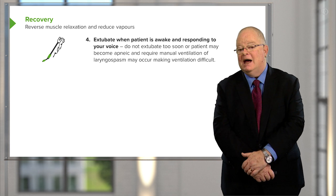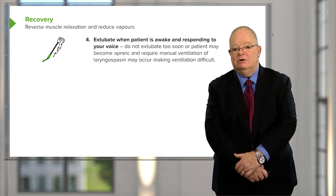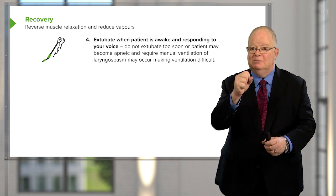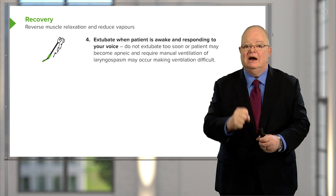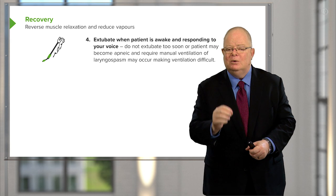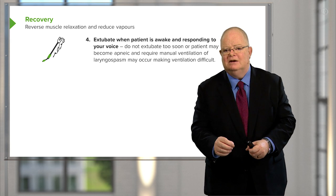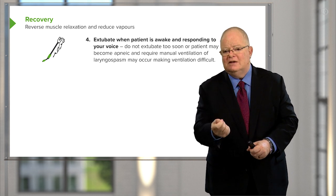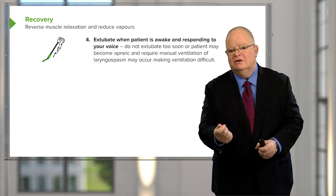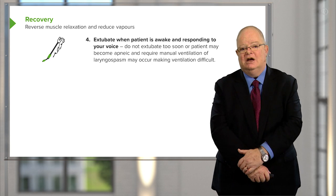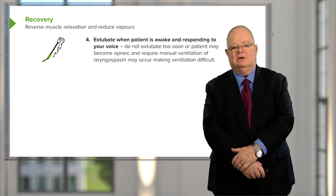The patient may become apneic and require manual ventilation, and laryngospasm may occur — spasm in the muscles of the larynx — which can make ventilation very difficult. Remember that often the only reason the patient is breathing at the end of surgery is because the tube is in place and irritating them. As soon as you remove the tube they have no reason to breathe, so you must make sure they are actually responding before removing it.